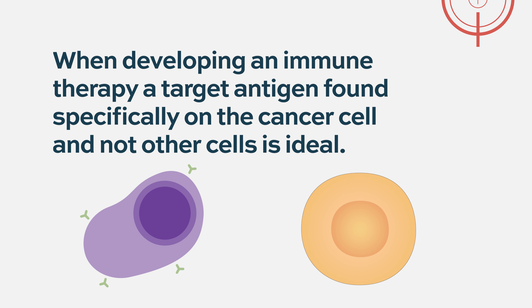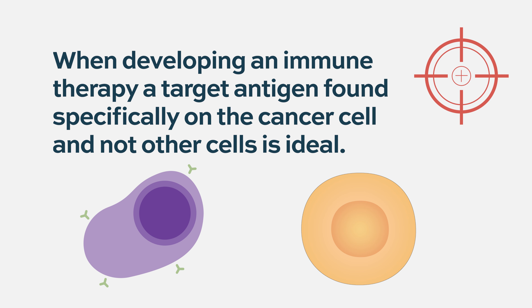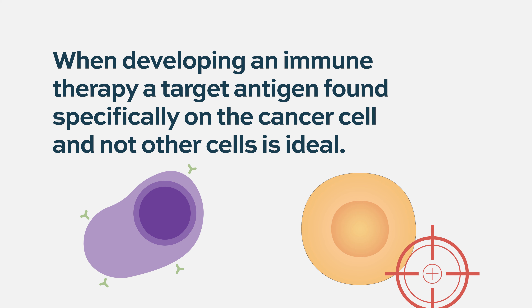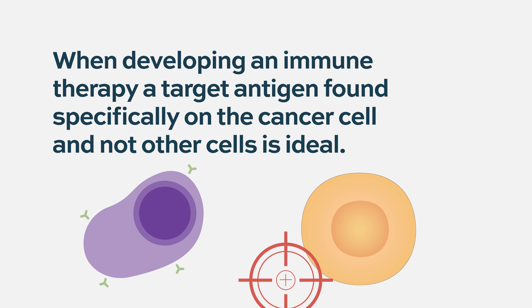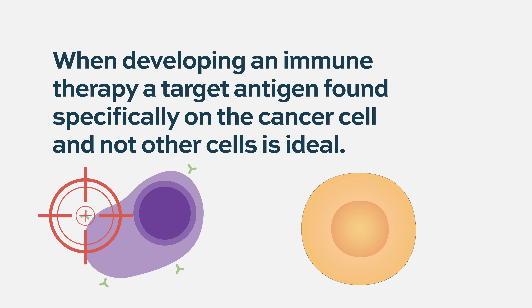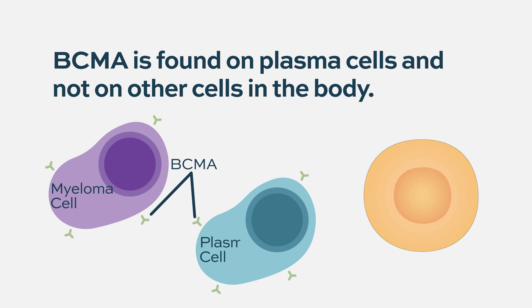That unique target is what we look for when making an immunotherapy — something where you're harnessing either the patient's own immune cells and engineering them, or using something that flags the myeloma cells for destruction by the immune system. Researchers found that BCMA, the B Cell Maturation Antigen, was fairly uniquely expressed by plasma cells and was something important to those cells.